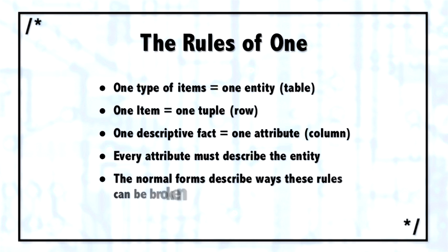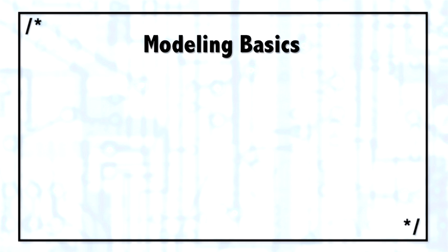If you follow these three rules of one, meaning one type of item, one entity, one item, one tuple, one fact, one attribute, you will always be normalized. Some key terms used throughout database modeling,